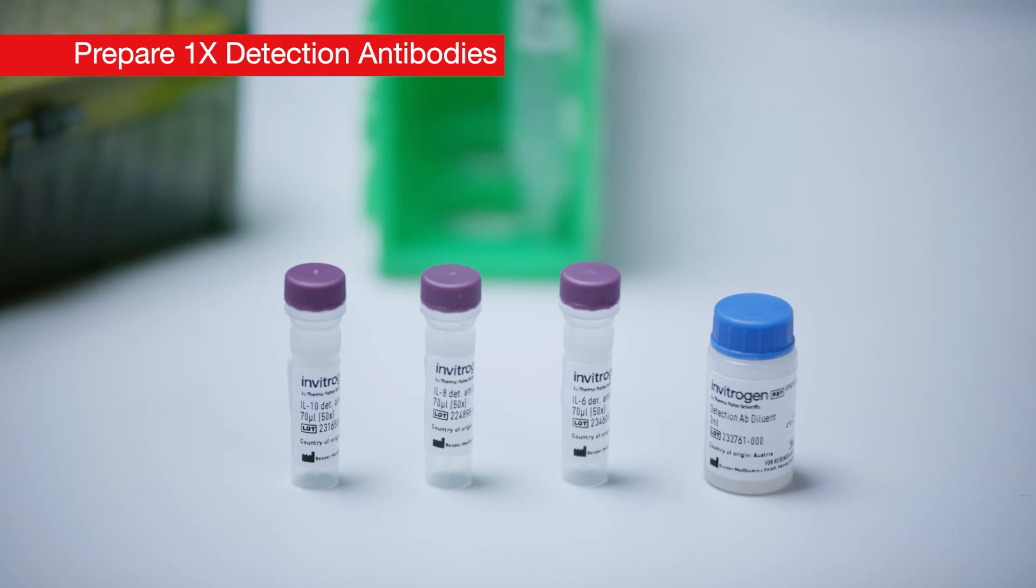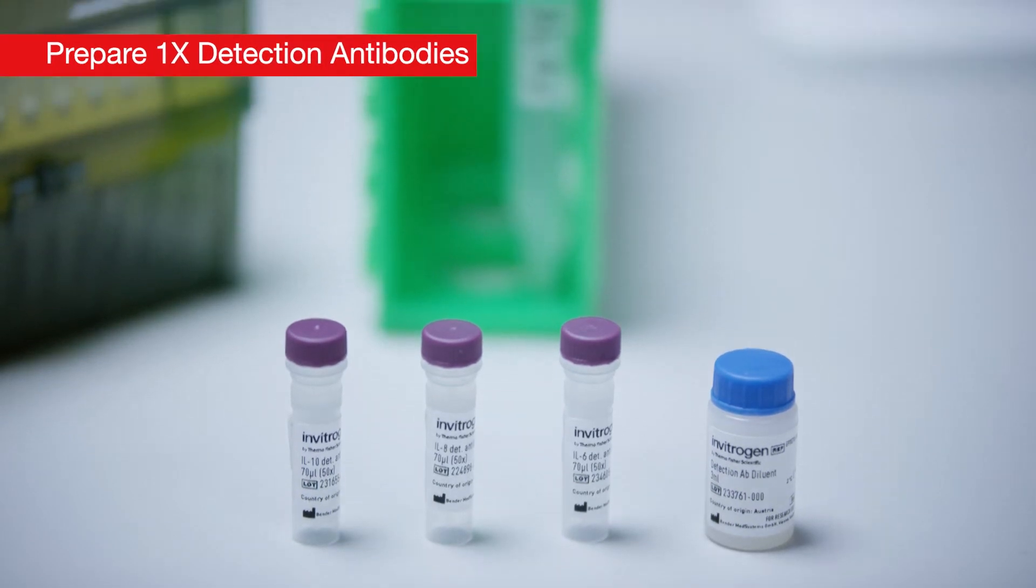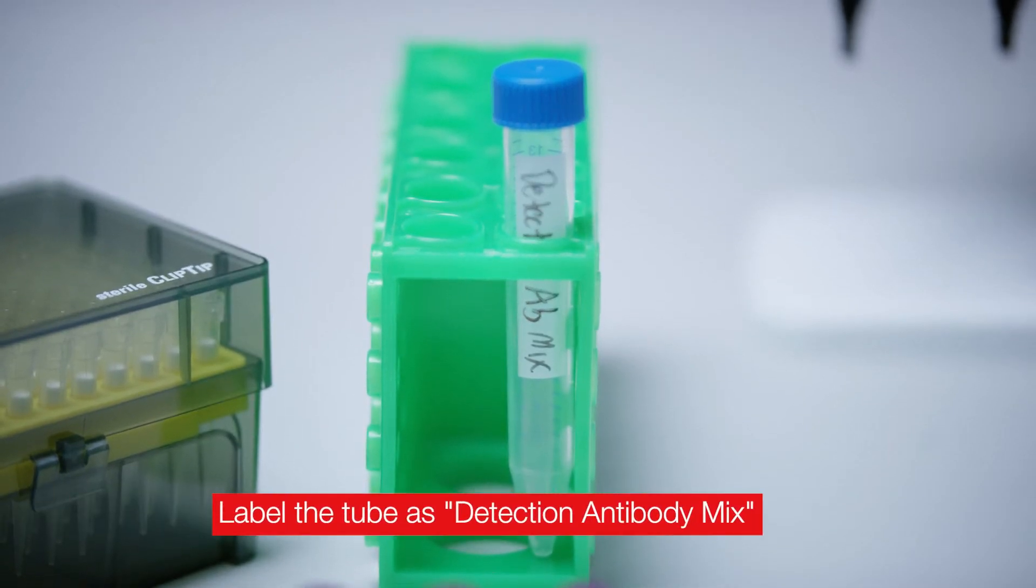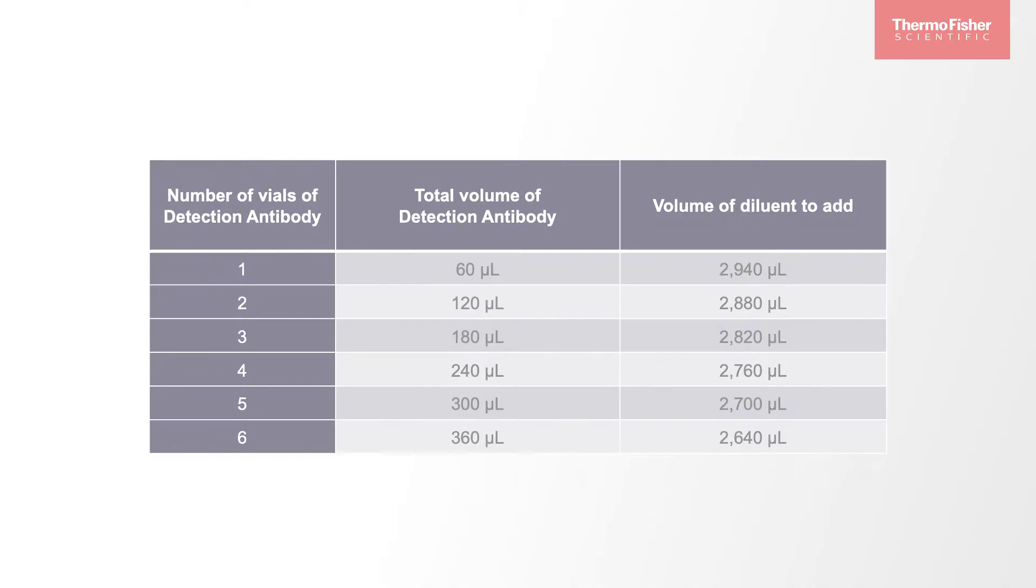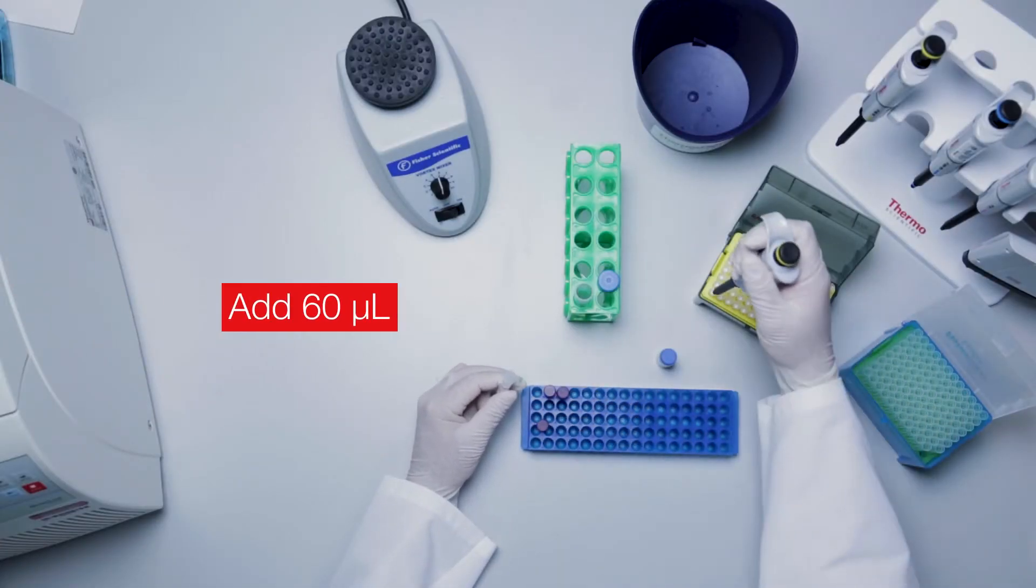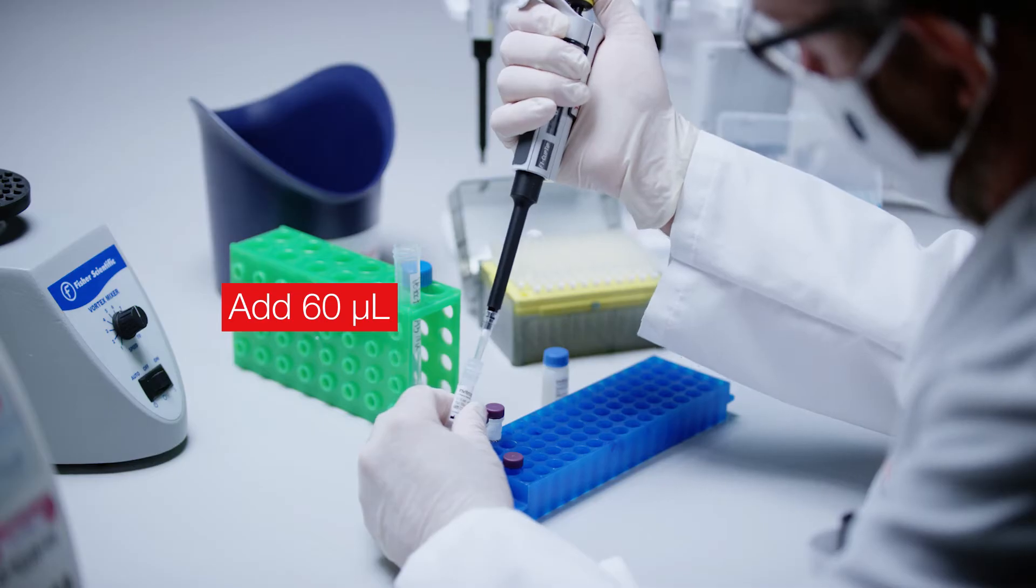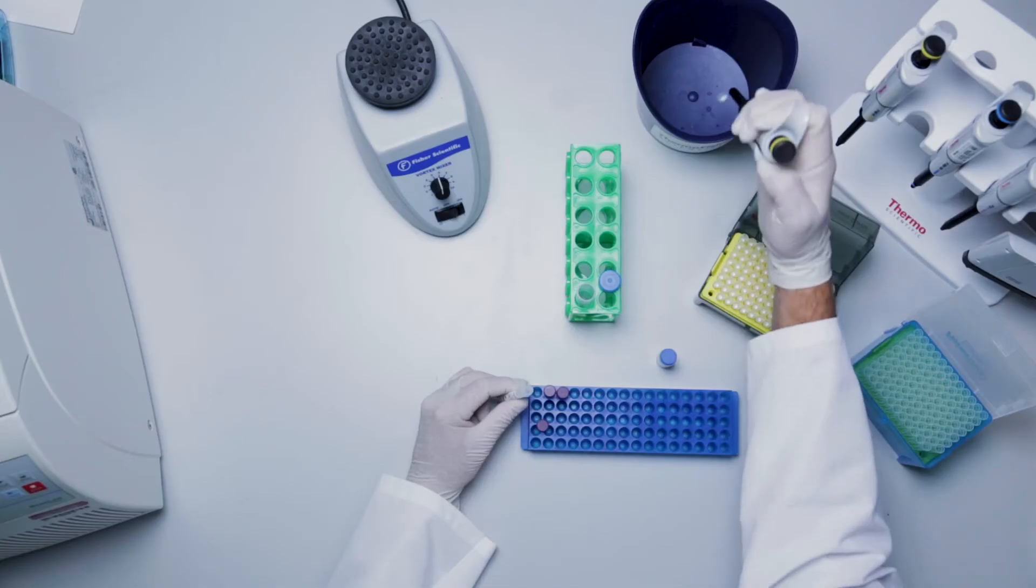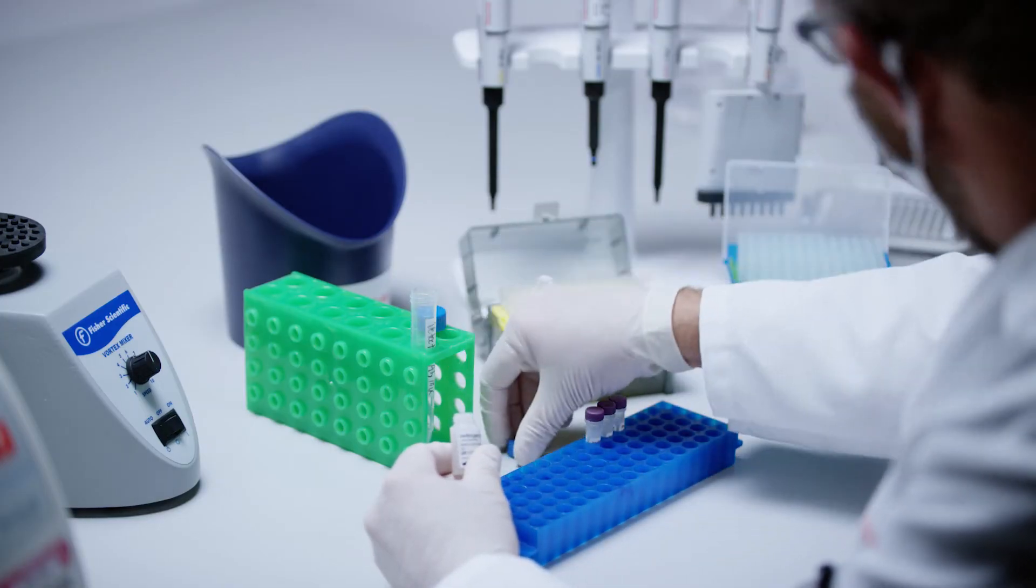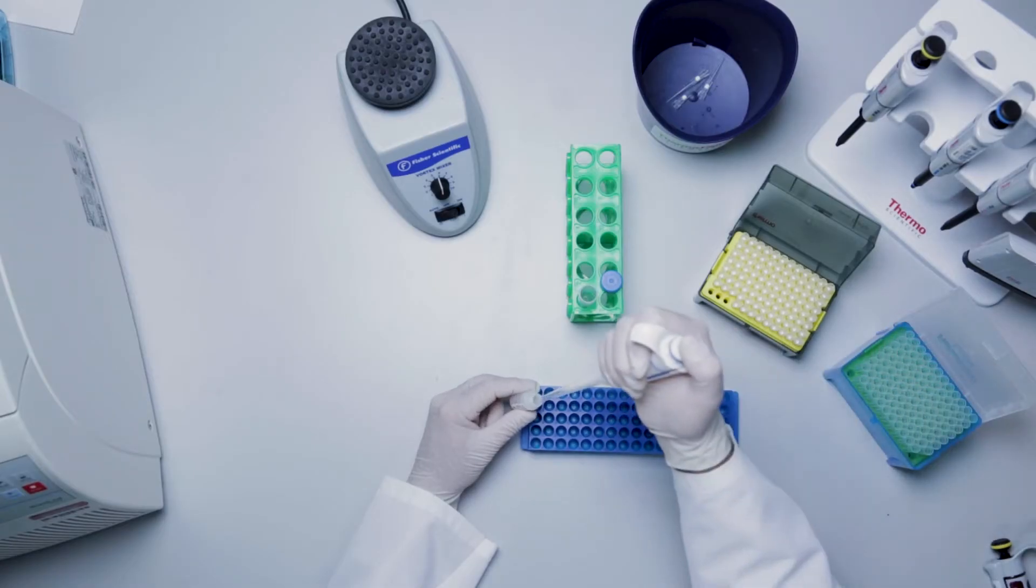The detection antibody in the simplex kit is provided at a 50x concentration. Label a 15 milliliter tube as detection antibody mix. Use the provided table in the user guide to check the needed volumes for a full 96 well plate. Scale accordingly if using a partial plate. Add 60 microliters of each detection antibody concentrate to the labeled tube and raise the volume to 3 milliliters using detection antibody diluent if using a full 96 well plate. Otherwise, adjust the volume accordingly.